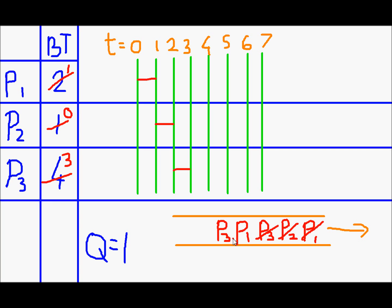Next is P1's turn. P1 will get hold of the CPU for one quantum of time and now the remaining burst time of P1 is 0, so it won't join the queue again.